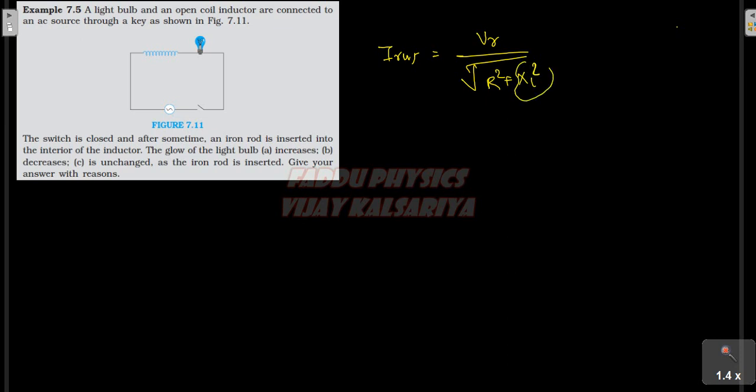Now, if you enter the iron rod, the XL will increase. So it depends on the RMS current.